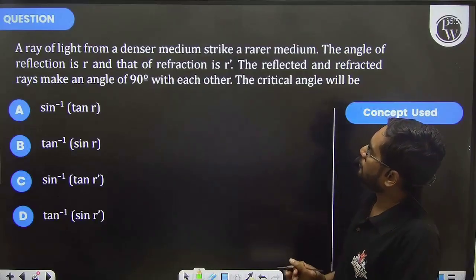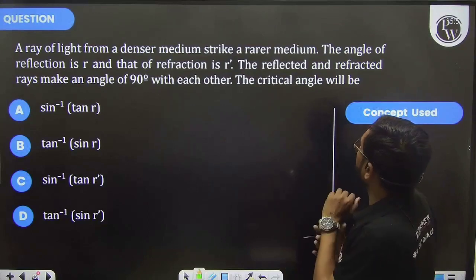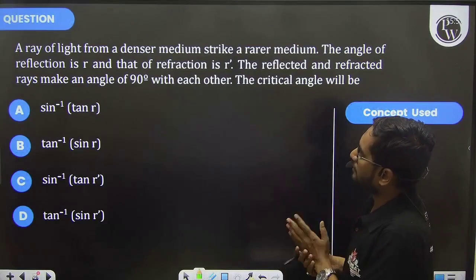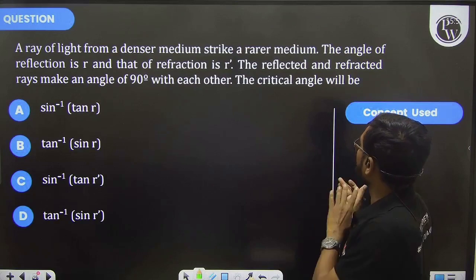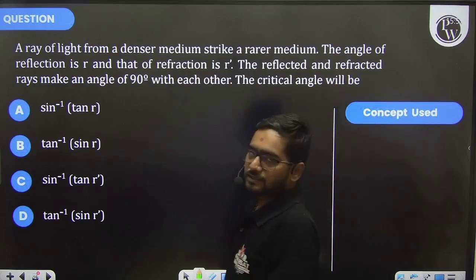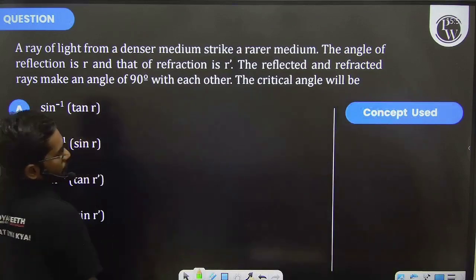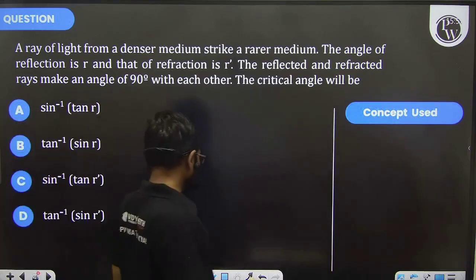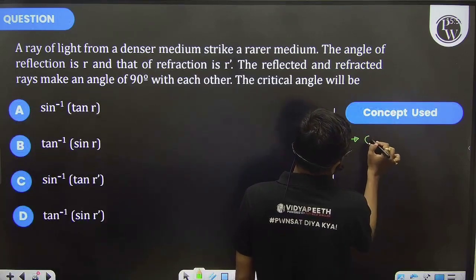We have a ray of light from a denser medium striking a rarer medium. The angle of reflection is r and the angle of refraction is r'. The reflected and refracted rays make a 90-degree angle with each other. So what should be the critical angle?